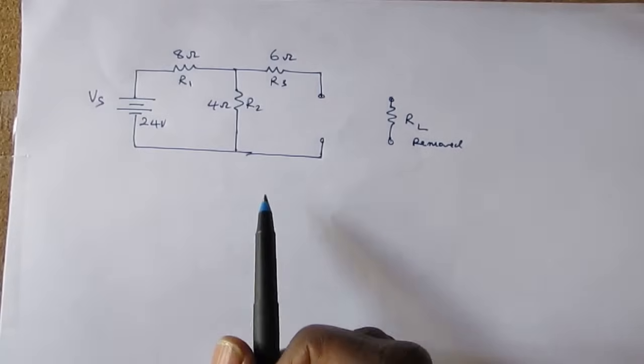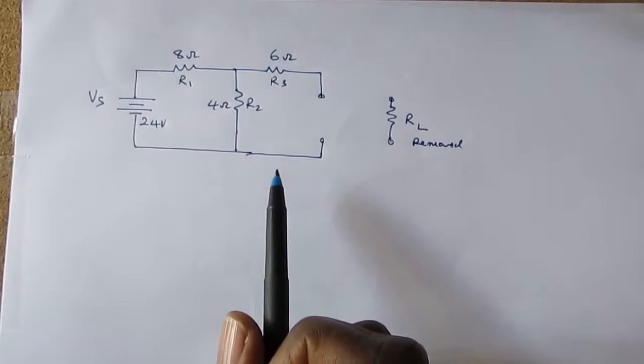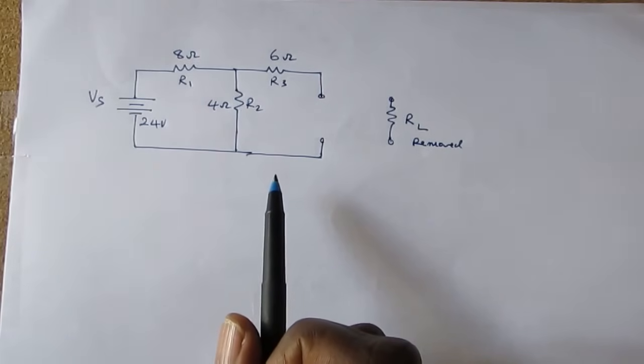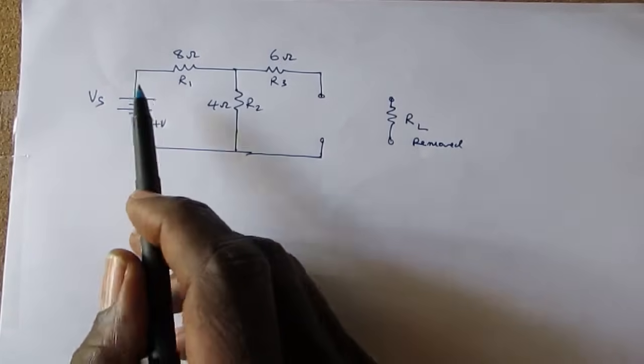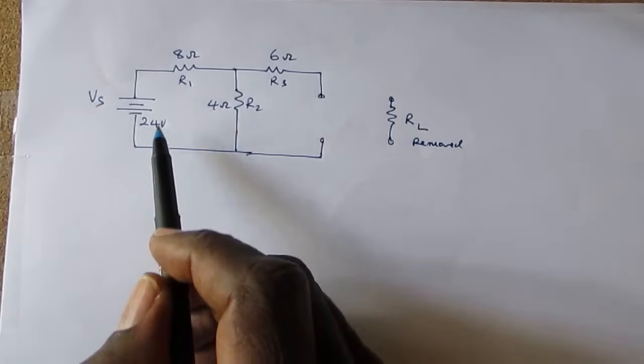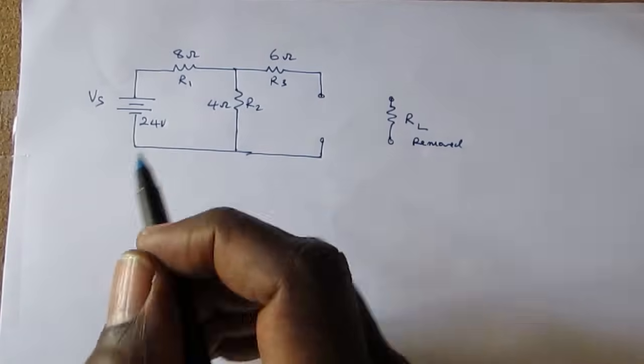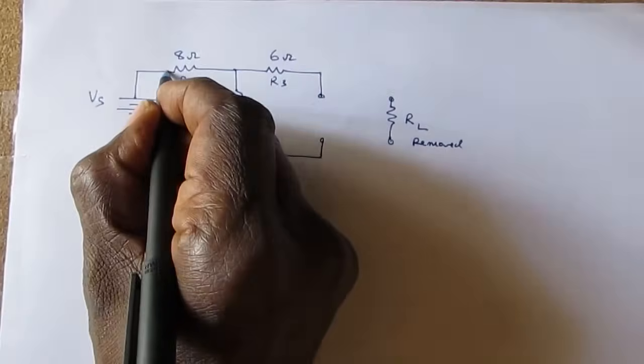The second to last step in producing the Thevenin equivalent circuit is to find the Thevenin resistance. To find Thevenin resistance, the first step is to remove the voltage source. Now, a voltage source is removed by shorting the points across the voltage source.